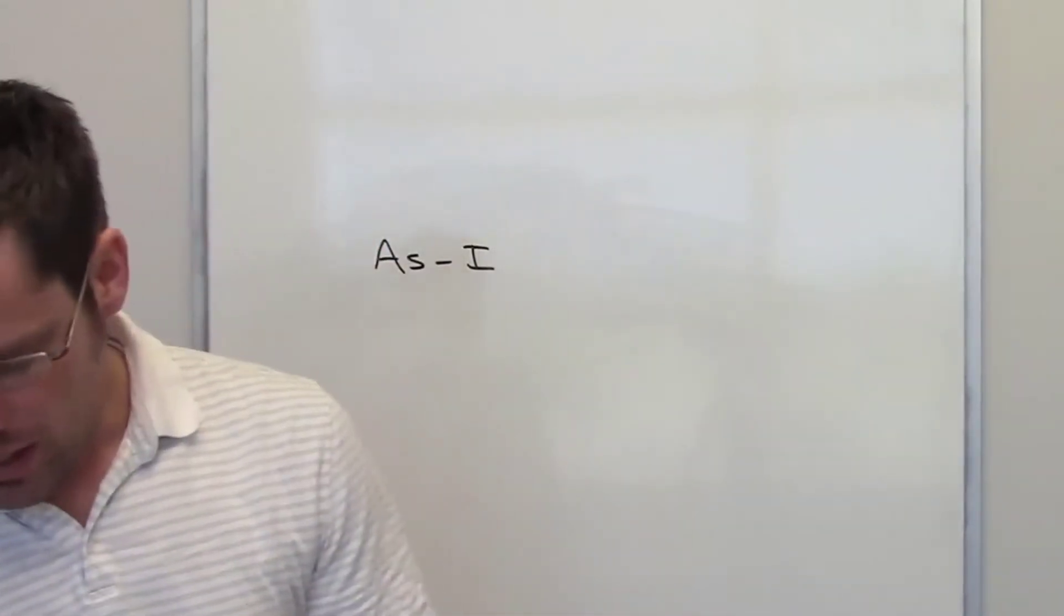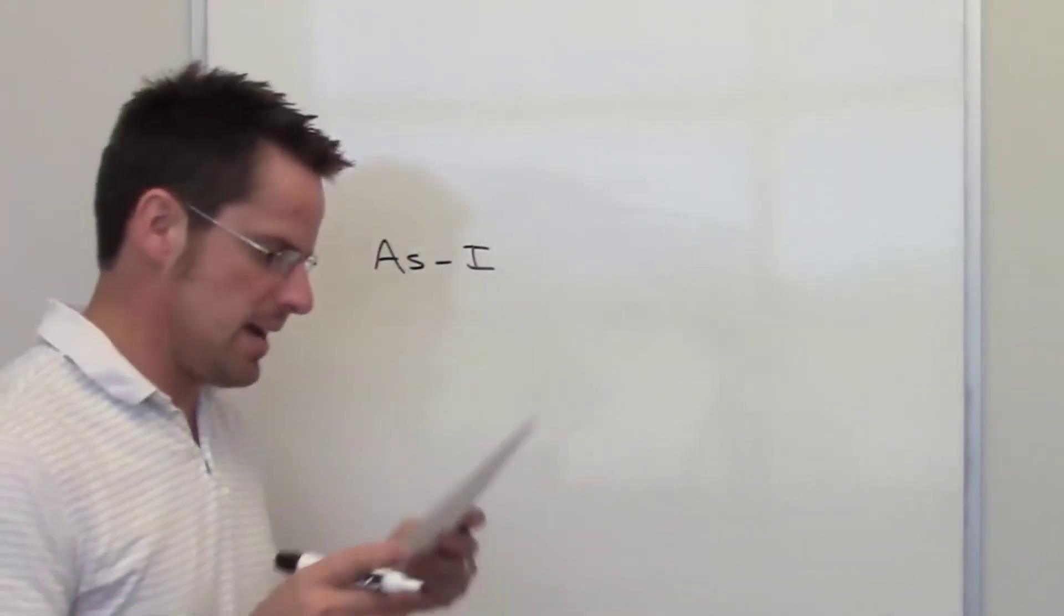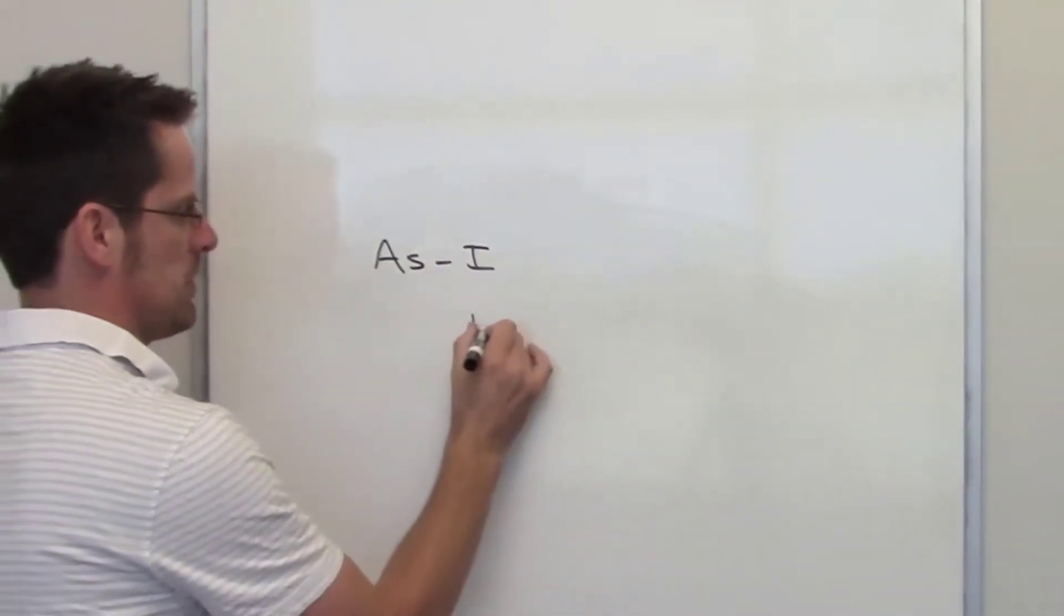As we examine that table we can see that iodine, which is element 53, has a theoretical bond length of 1.33.